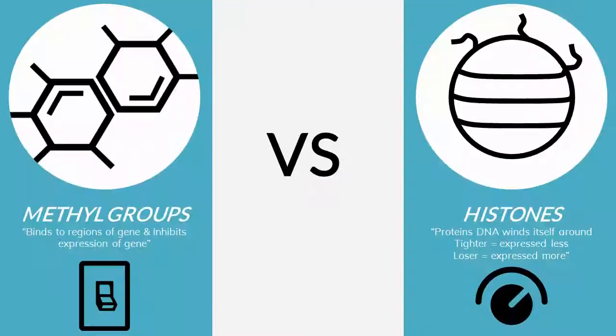There are two main ways we can induce epigenetic changes. One is through methylation, which acts like a switch turning genes on and off, and the other is histone modification, which acts like a knob, turning up or turning down expression.